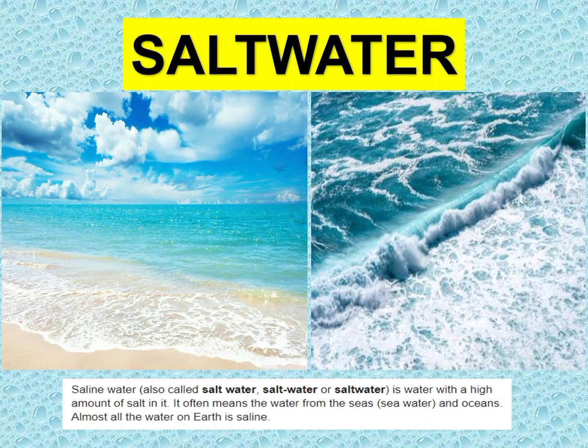While salt water, or saline water, is water with a high amount of salt in it — that is why it is called salt water. This water comes from the seas, from the ocean. Did you know that almost all the water on Earth is saline? Almost 70% of the Earth is made up of water, and almost all of that 70% is salt water.